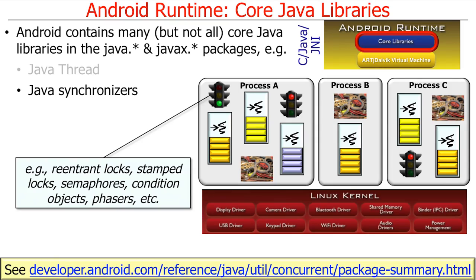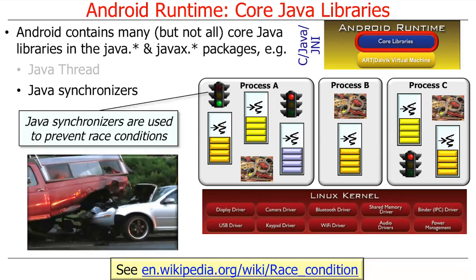Examples of these Java synchronizers include reentrant locks, stamp locks, semaphores, condition objects, phasers, and so on. These various synchronizers are defined in the java.util.concurrent package, as well as the java.util.concurrent.locks and java.util.concurrent.atomics packages. Java synchronizers are typically used to prevent race conditions, which can occur when two or more threads attempt to access a shared object or shared resource that is not properly protected by a lock.